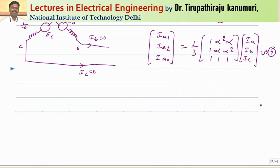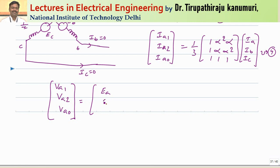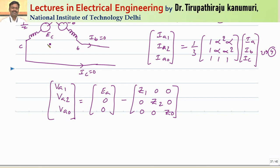Next, we know the relationship of the voltages. VA1, VA2, and VA0 can be calculated from the sequence impedance. In the last class I derived this for the case of an alternator. This is equal to [EA, 0, 0] minus the diagonal matrix with Z1 (positive sequence impedance), Z2 (negative sequence impedance), and Z0 (zero sequence impedance), multiplied by [IA1, IA2, IA0]. The zero sequence impedance Z0 will be the zero sequence impedance offered by the generator plus 3 times the neutral impedance. I am taking this as equation number 5.